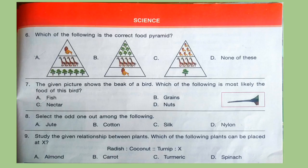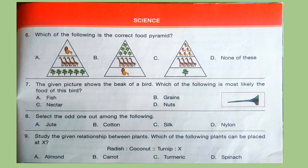Next section is Science. Question 6: Which of the following is the correct food pyramid? Look at the options and select your answer. Correct answer is option A. Question 7: The given picture shows the beak of a bird. Which of the following is most likely the food of this bird? Look at the beak and find out your answer. Correct answer is option C, Nectar.